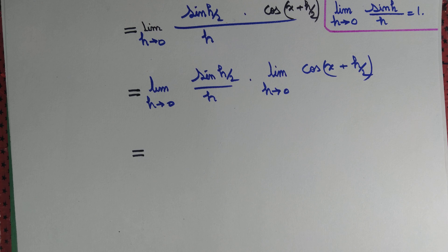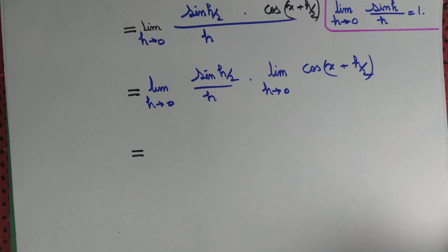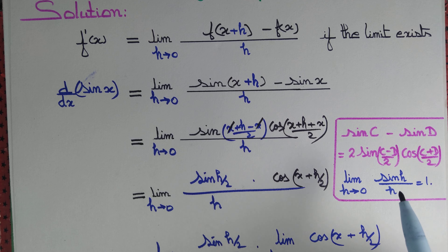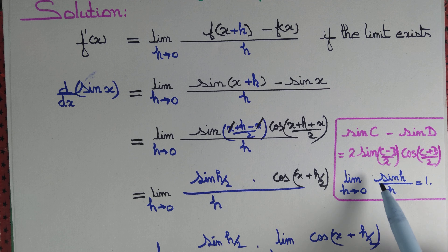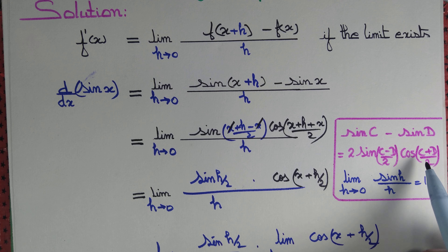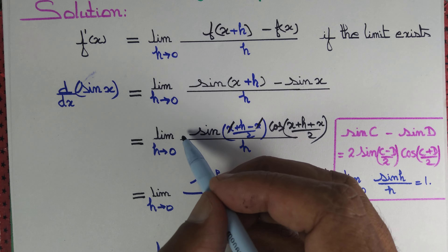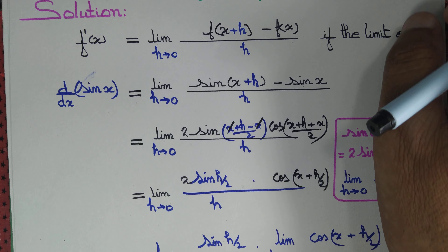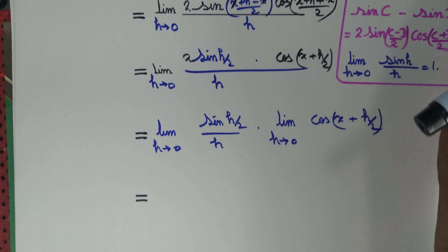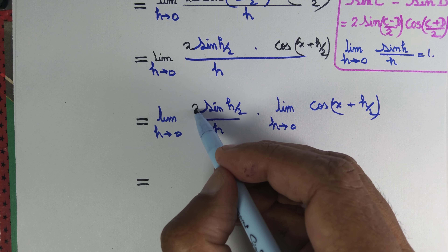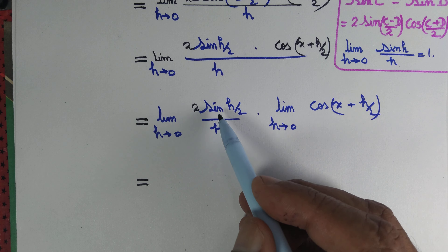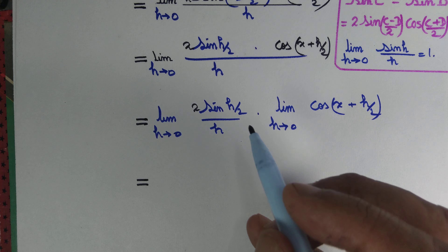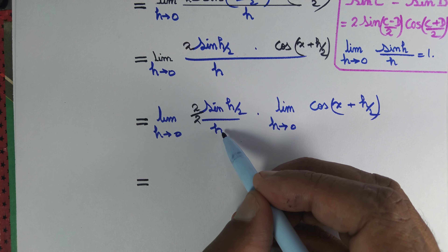Now, I notice I forgot the factor of 2. Recall that sin C minus sin D is 2 sin((C-D)/2) cos((C+D)/2), so there should be a factor of 2 in the numerator. We can divide both numerator and denominator by 2, rewriting sin(h/2) over h as sin(h/2) over (h/2), with an appropriate adjustment.